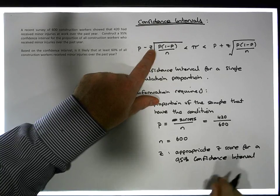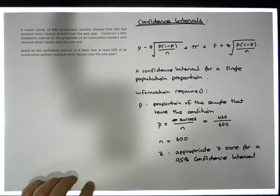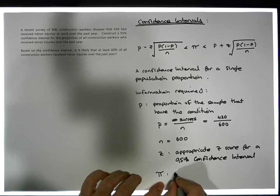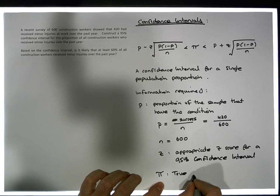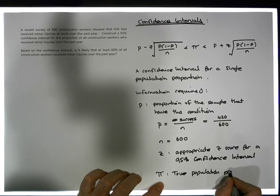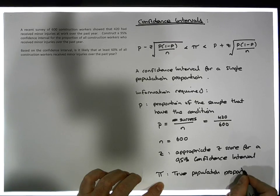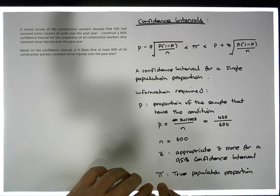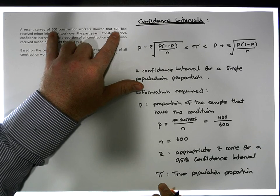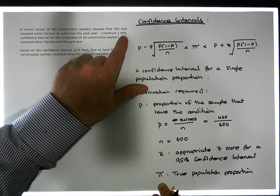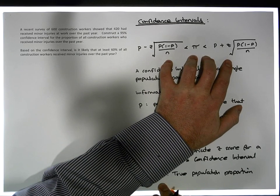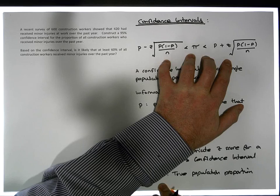We nearly have everything to construct this particular interval. Pi is the true population proportion. Typically in exams these formulas are given to us, but the key thing is that we have a single sample with a proportion provided, we're asked to construct a 95% confidence interval, and as such the appropriate equation to use is this particular one.